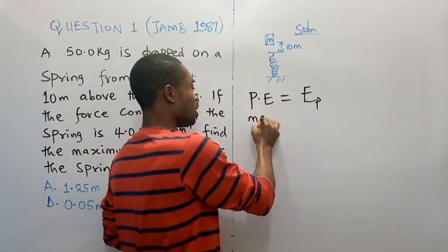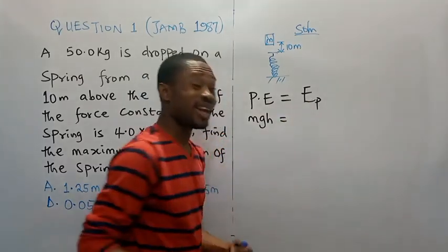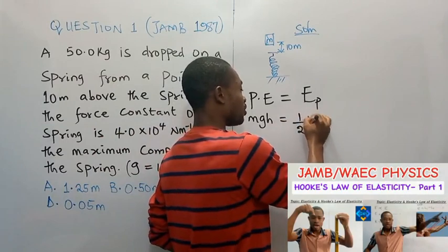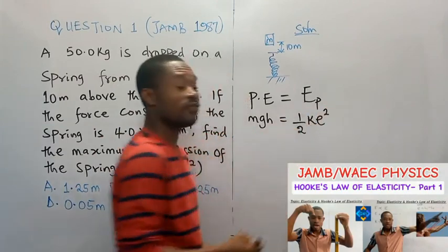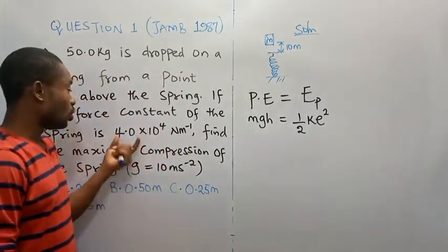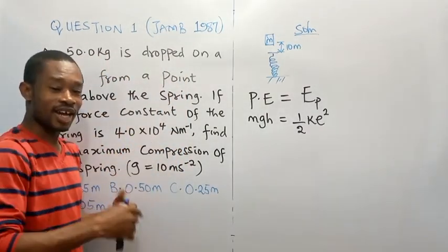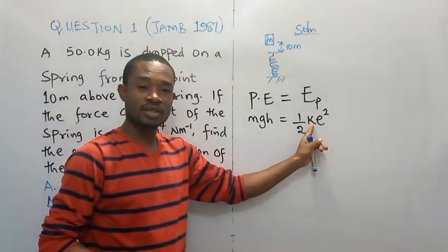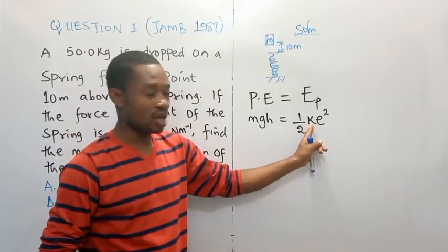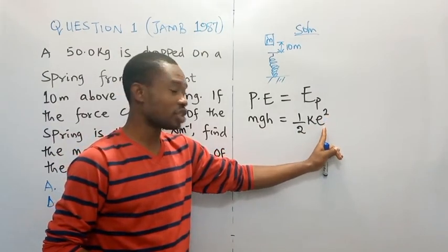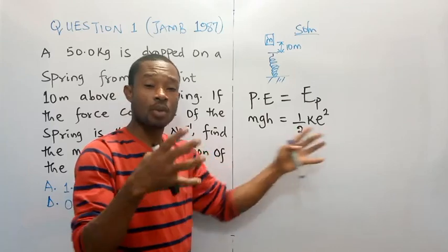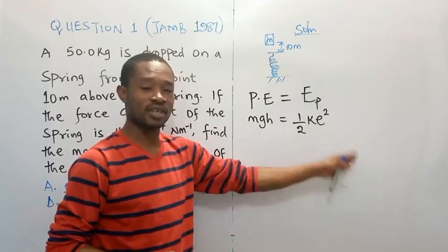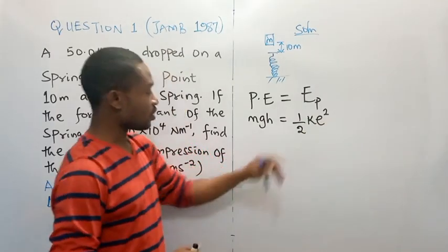Our potential energy here is mgh. And, that is going to be equal to elastic potential energy from our previous class. We established it to be half k e squared if you know the force constant, k. If we know the force instead of the force constant, that's to say maybe the examiner didn't give you the force constant but gave you force, then you would come to this and fit f instead of k. And, in that case, this extension, which in this case is the compression, will not be squared. It will simply be half fe. So, you want to take note of this.